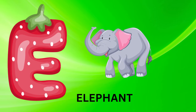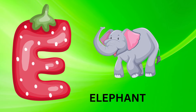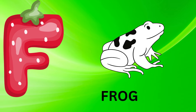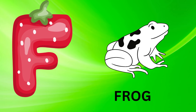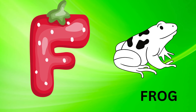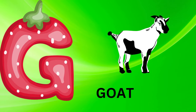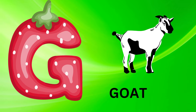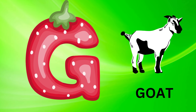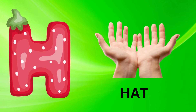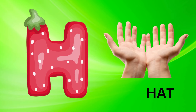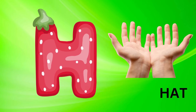E is for elephant, e-e-elephant. F is for frog, f-f-frog. G is for goat, g-g-goat. H is for hand, h-h-hand.